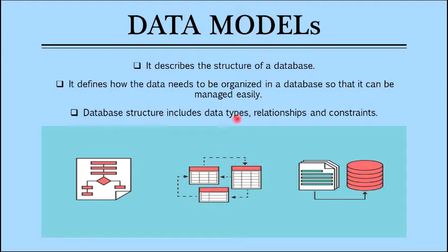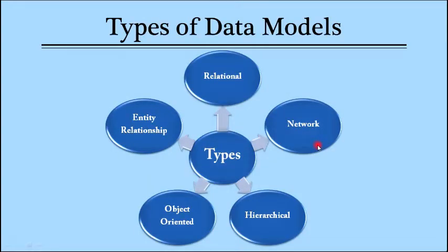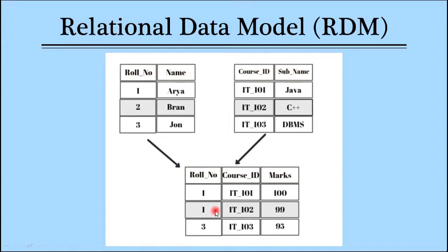So let's see how many data models are there in DBMS. There are five types: the first one is relational model, the next one is network model, another one is hierarchical, object-oriented, and entity relationship model. From these, we are going to learn about the relational data model, the hierarchical model, and the network model.